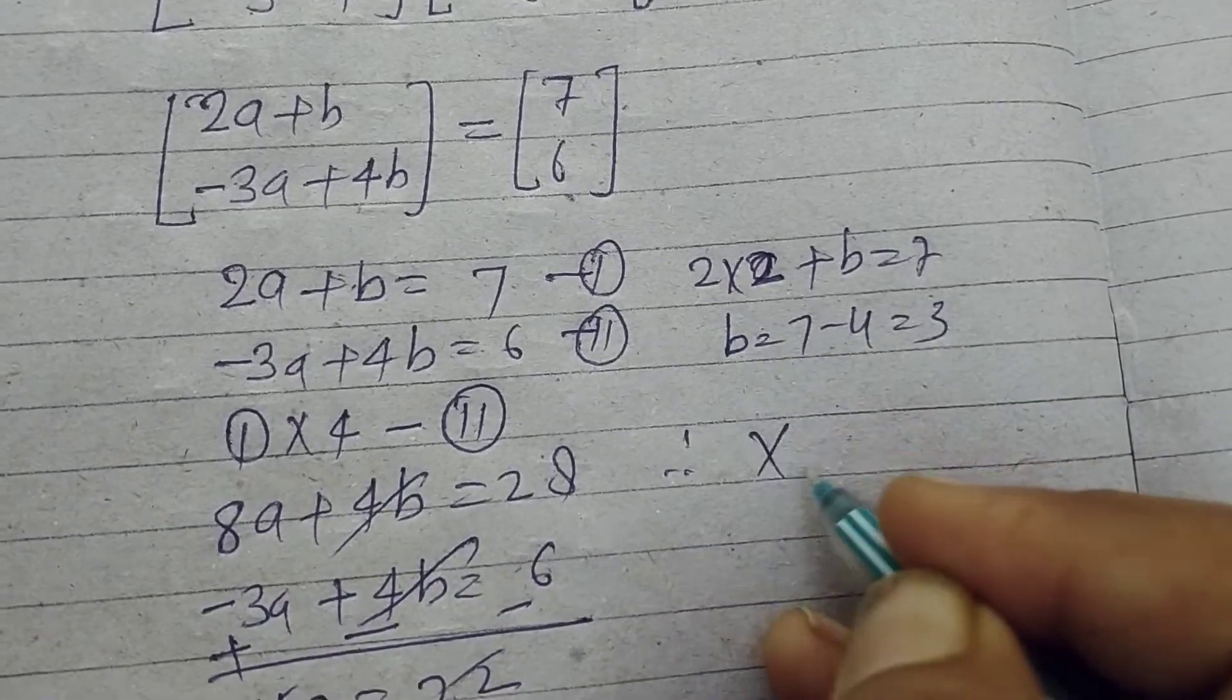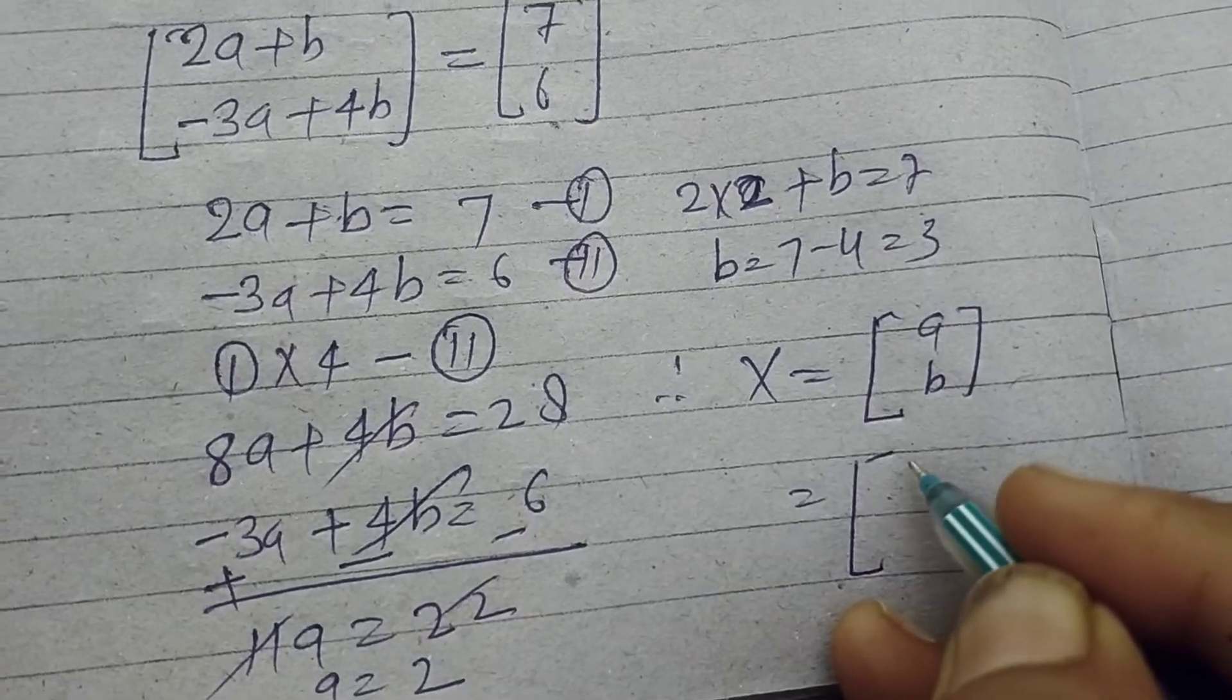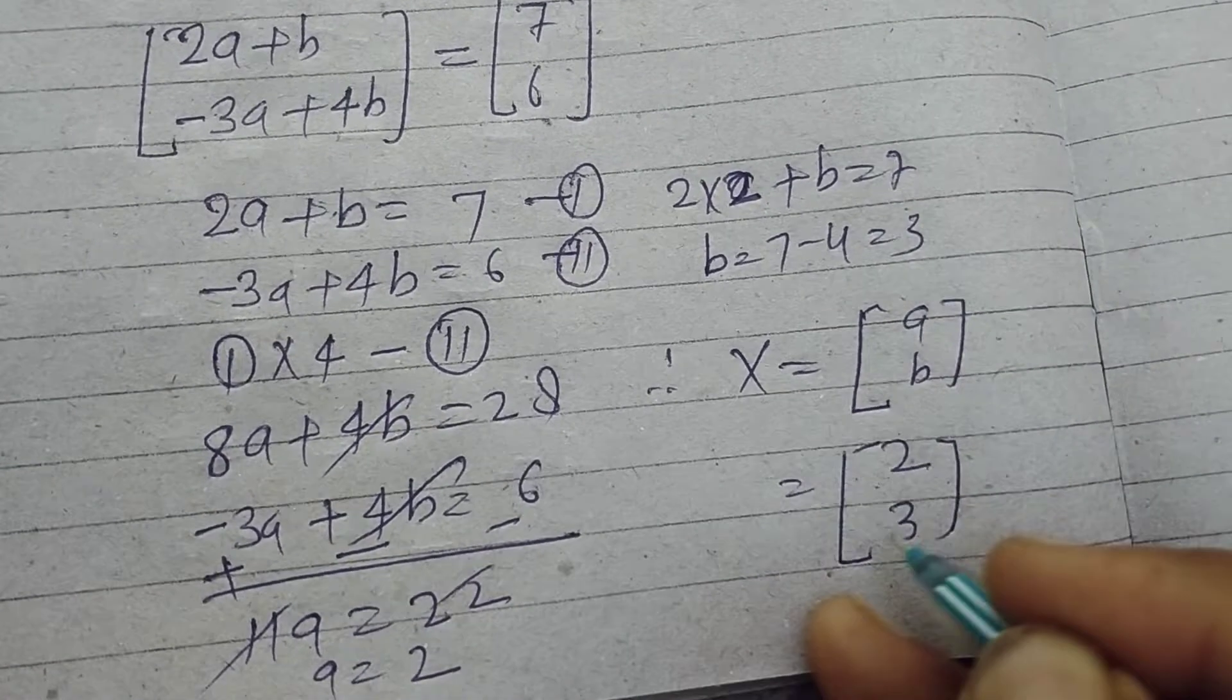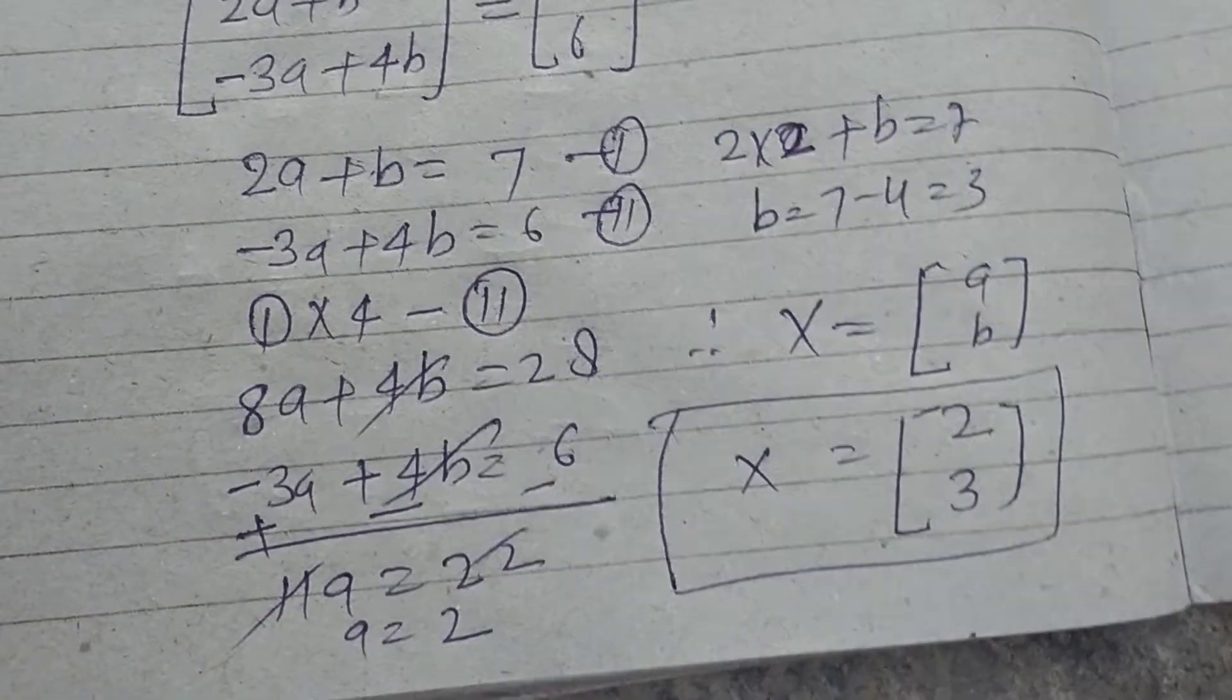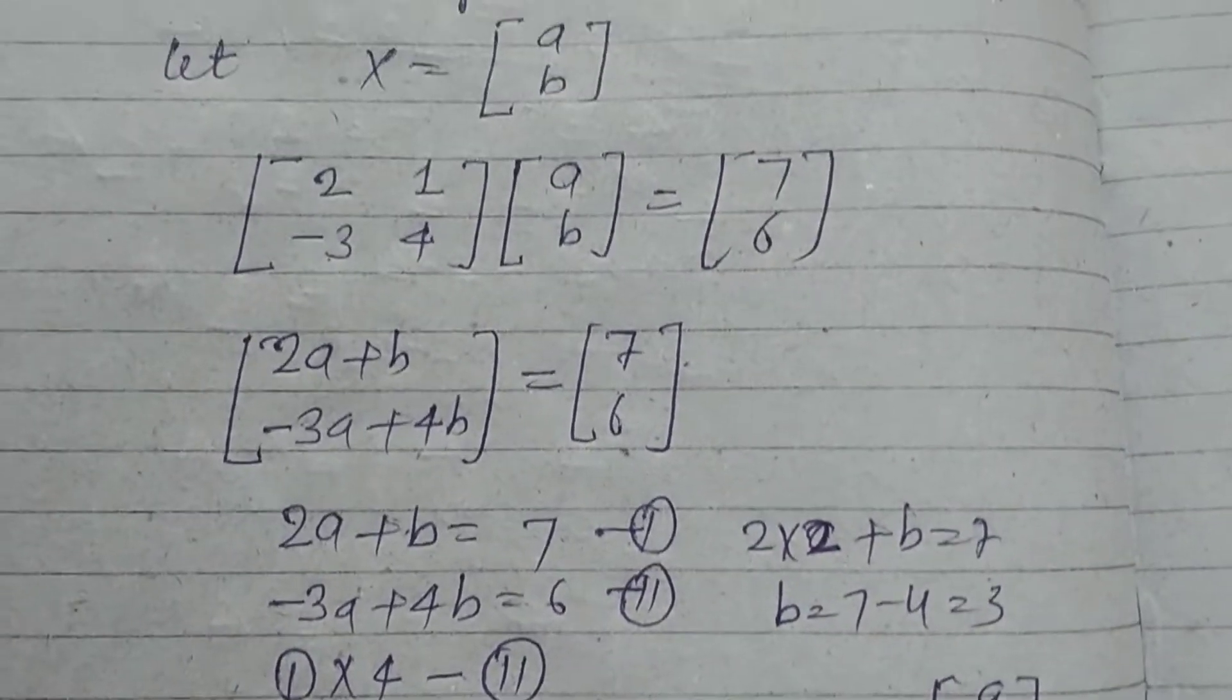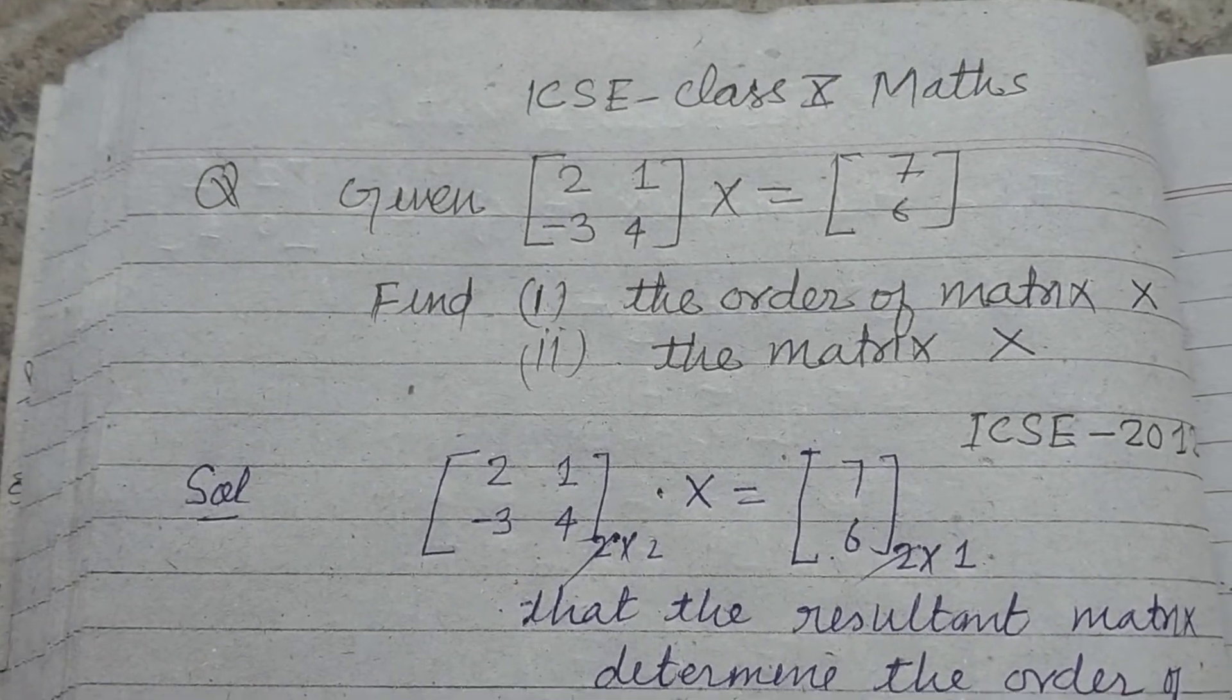So the matrix we have taken as [a; b], so a is 2 and b is 3. Therefore X is [2; 3]. Students, in this way we solve this problem. I hope you got it. Please like the video, subscribe the channel, thanks for watching.